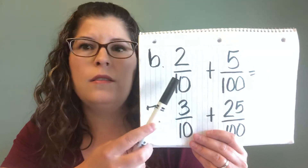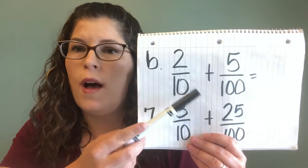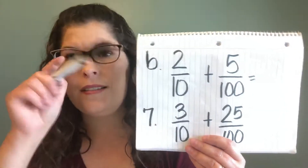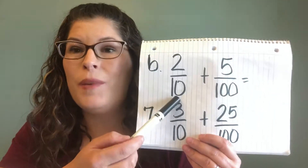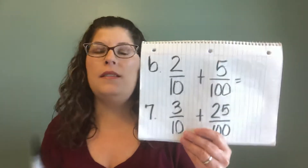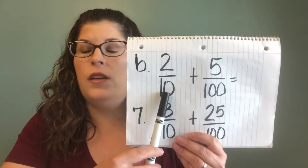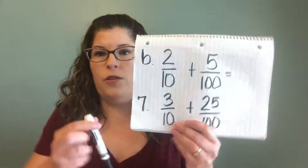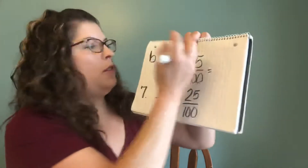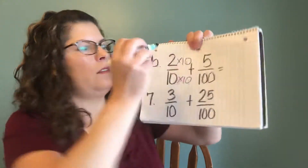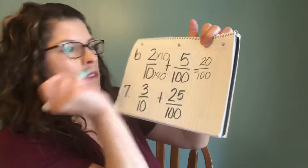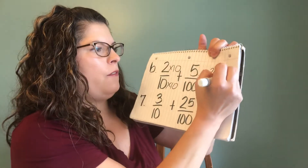What can I do to make that 10 into a hundred? Can I add, subtract, multiply, or divide? Well, we can multiply 10 times 10 to equal a hundred. Whatever we do to our denominator, we need to do to our numerator — we've talked about that, making them the same. So I'm going to multiply this 10 by 10, which means I've got to multiply that 2 by 10.